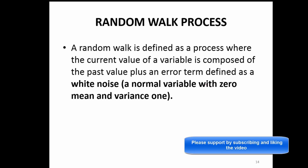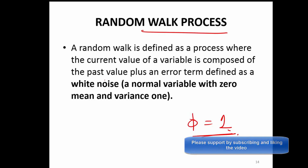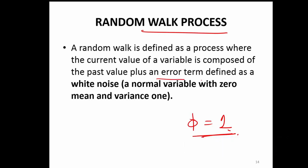We will talk about the random walk process. We are interested in the stochastic trend, and one of the special cases of stochastic trend is the random walk process. And when is that going to happen? When psi takes a value of 1. A random walk is defined as a process where the current value of the variable is composed of the past value plus an error term.